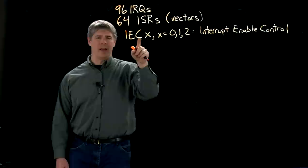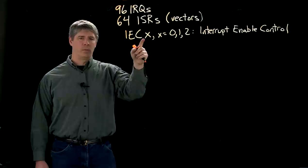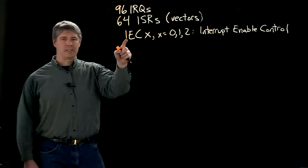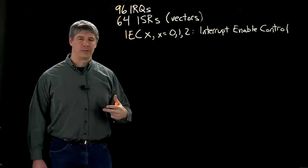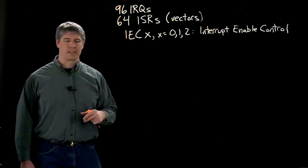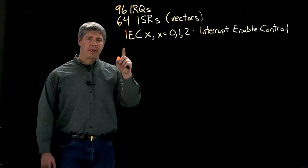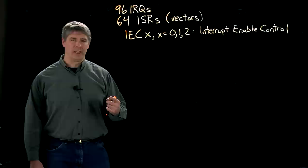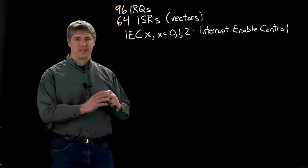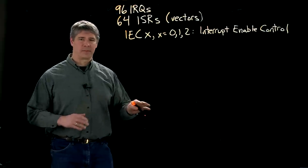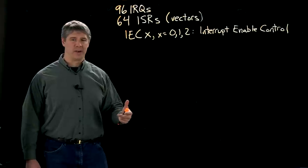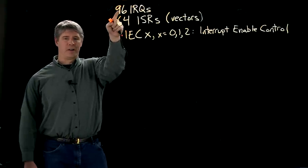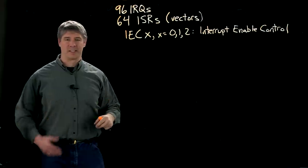The reason that we have three of these registers, IEC zero, one, and two, is that we have 96 IRQs. Each of these special function registers has 32 bits. So three of them makes 96 bits. And every bit of IEC zero, one, or two, controls whether one of the interrupts is enabled or not. If it's a zero for that interrupt, then that IRQ cannot generate interrupts. If it's a one, then it can. So we've got 96 bits to tell us which of our 96 interrupt events actually can generate interrupts.